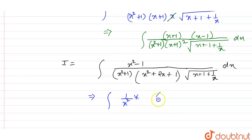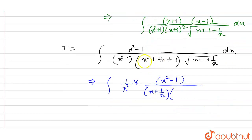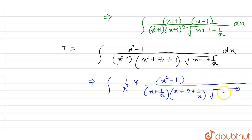Let's see how. The numerator is x squared minus 1. We have taken 1 by x from here and 1 by x from here. So we have x plus 1 by x here. And similarly, x plus 2 plus 1 by x is left. And we have left with under root of x plus 1 plus 1 by x, with respect to dx here.